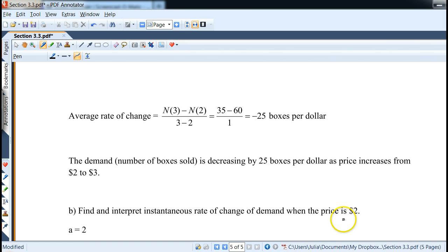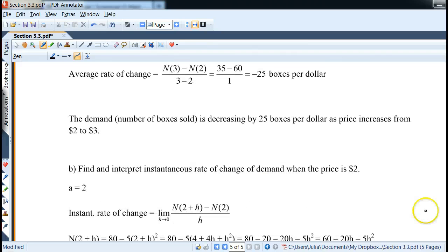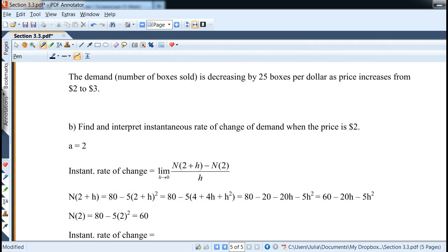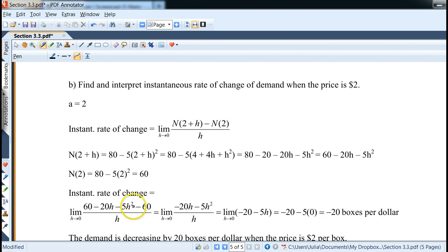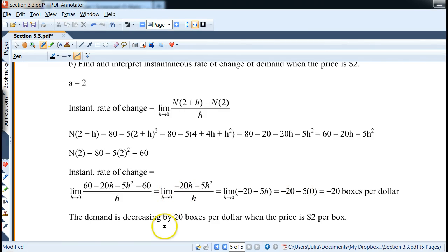Now we want to find and interpret the instantaneous rate of change at the price is 2. A similar idea, now notice we use n here with a 2, again, so it should be a familiar computation by now. We obtain 60 minus 20h minus 5h squared, and for n(2) we obtain 60. Instantaneous rate of change, again, the constants cancel, and then we can factor or divide by h. So we end up with negative 20 boxes per dollar, it's still decreasing. So the demand is decreasing by 20 boxes per dollar when the price is 2 dollars per box. So that's the idea for this section.